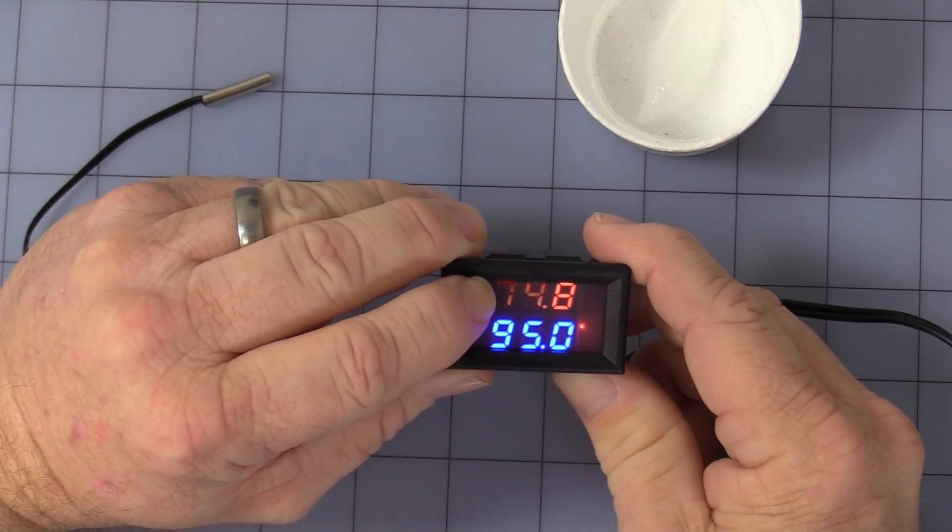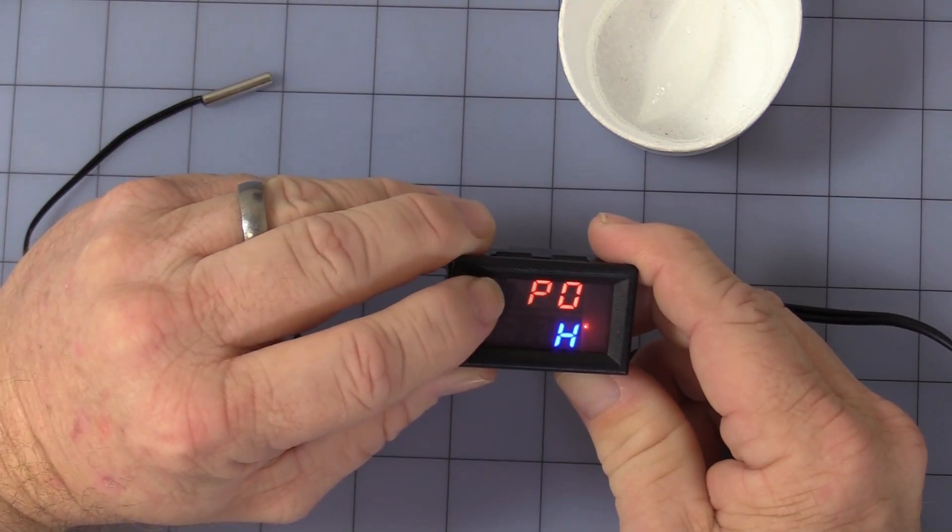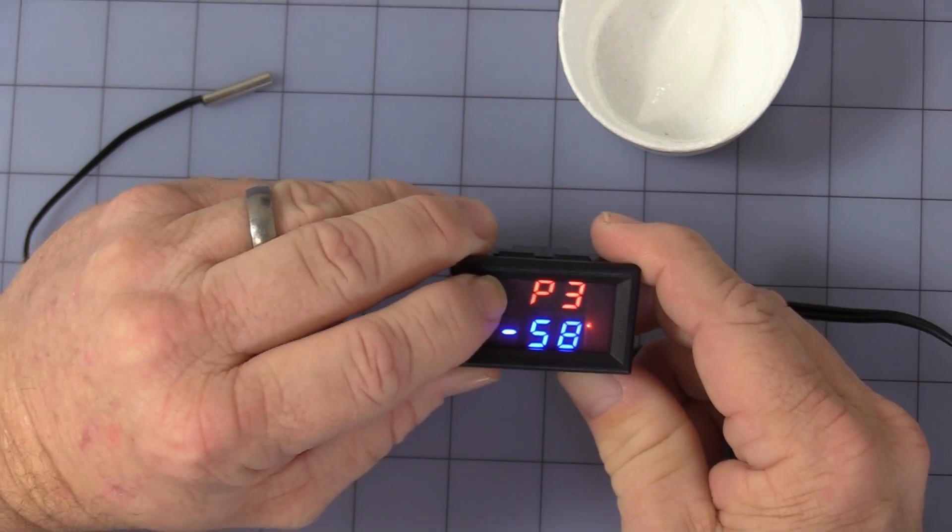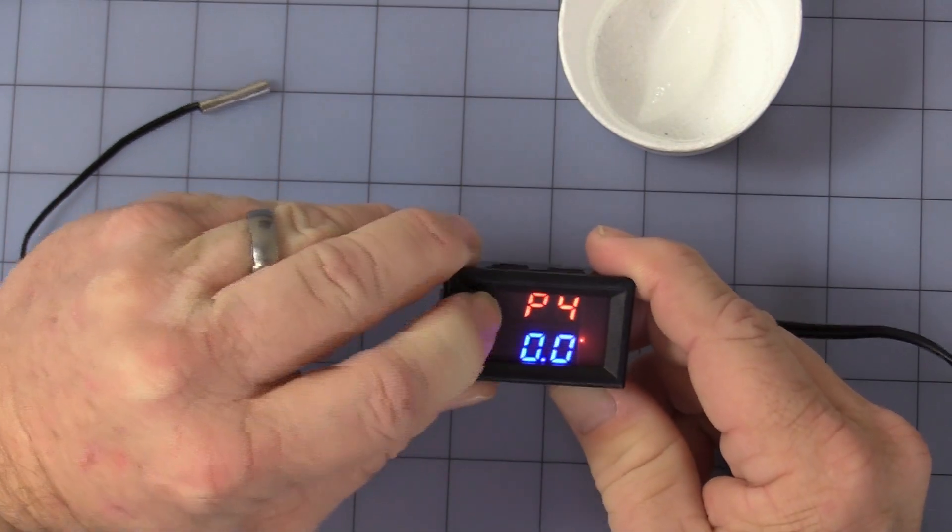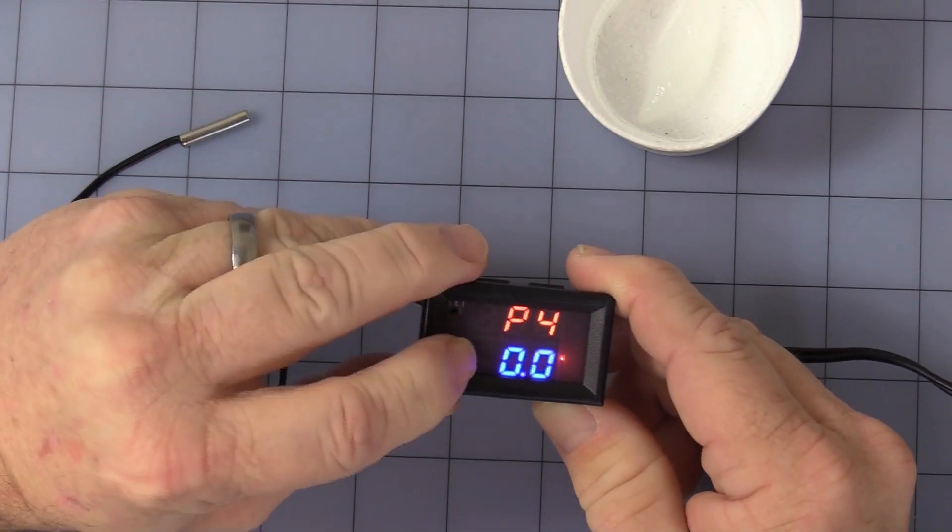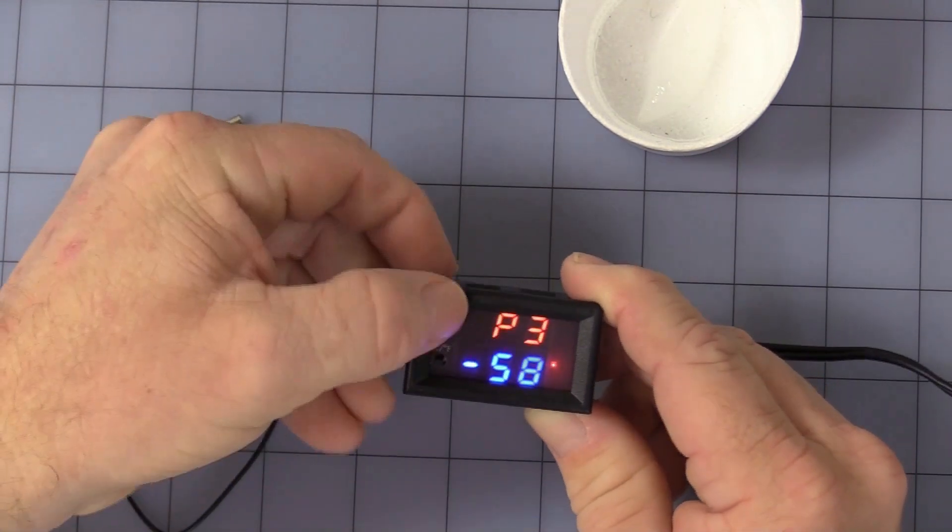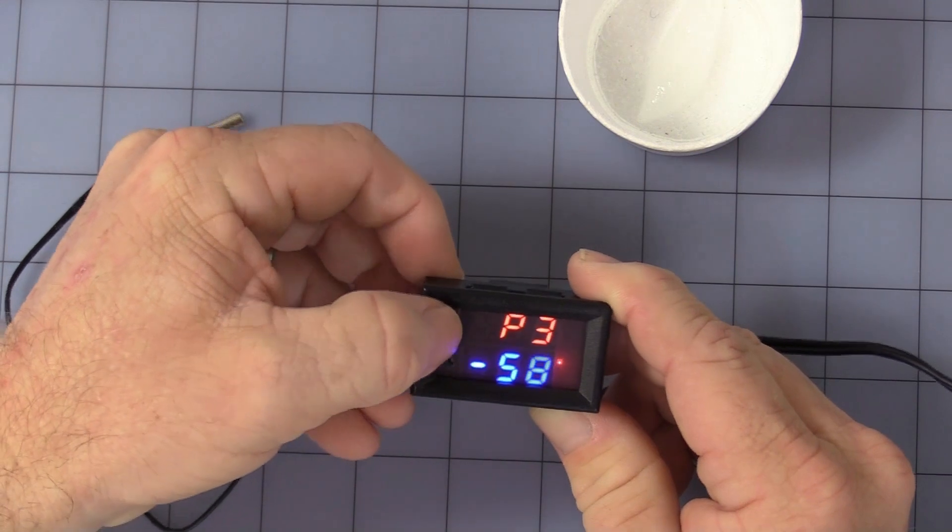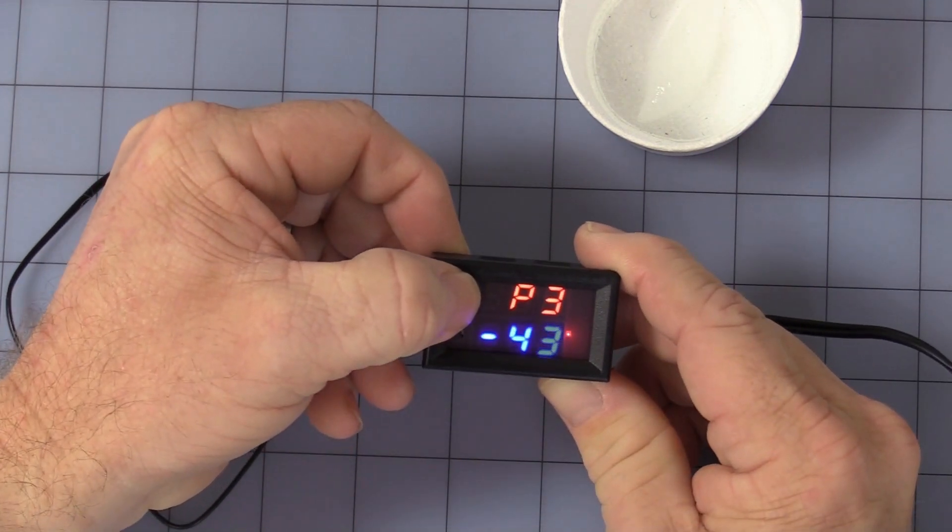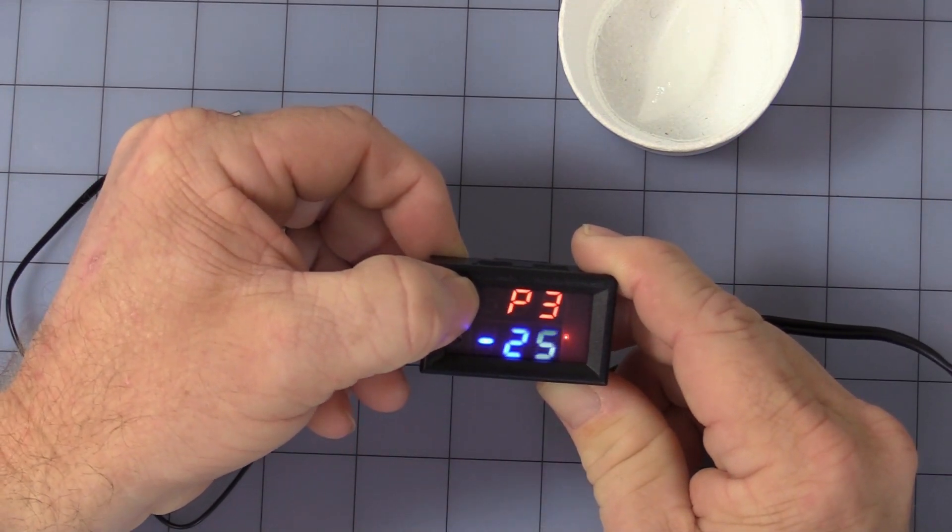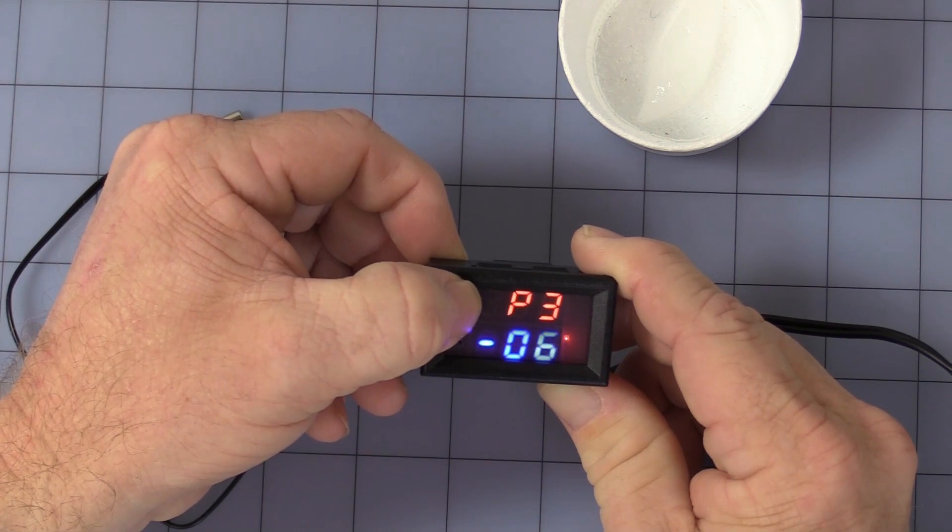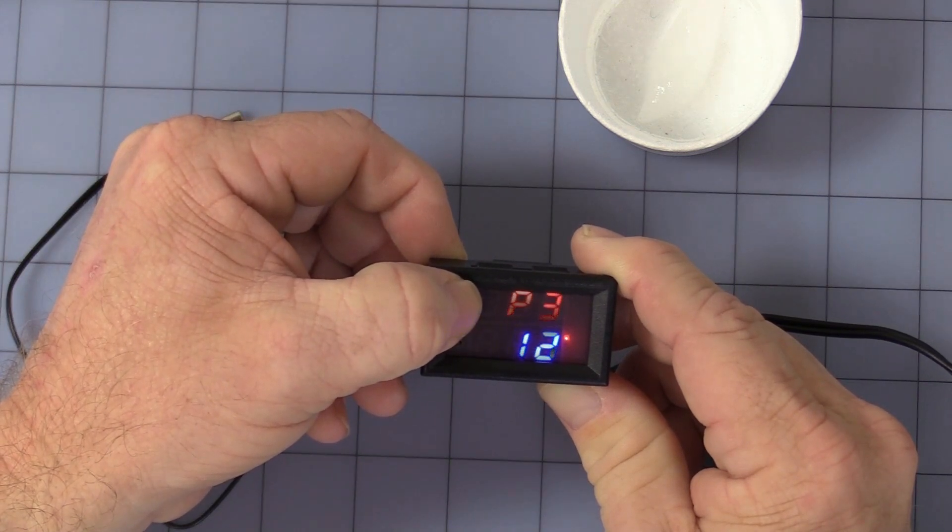Once it stops flashing, it goes into program. Now, P3 is the low set limit. Same function, just won't let you set below a certain temperature. Press and hold both buttons to enter the program. Once it's flashing, you can adjust it. Now, let's say you don't want anybody to be able to adjust it below freezing.